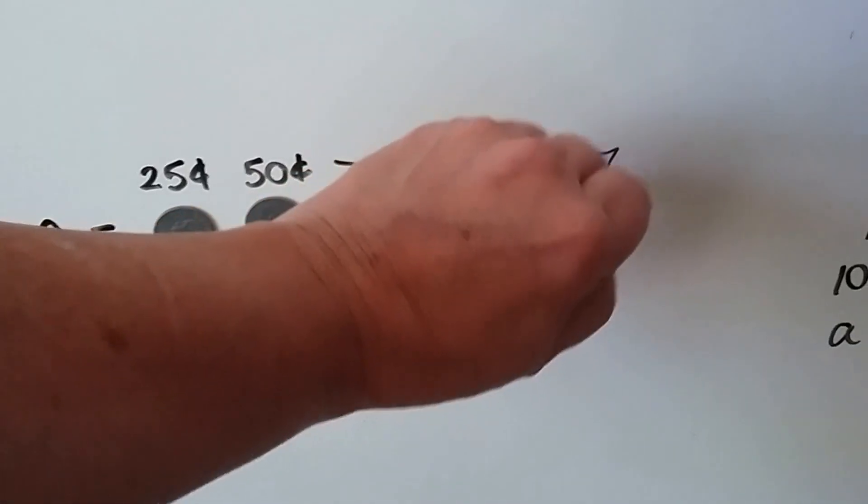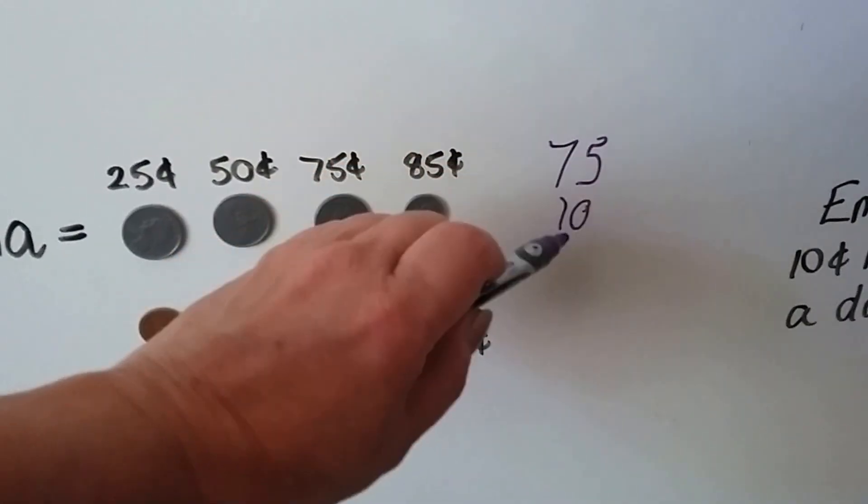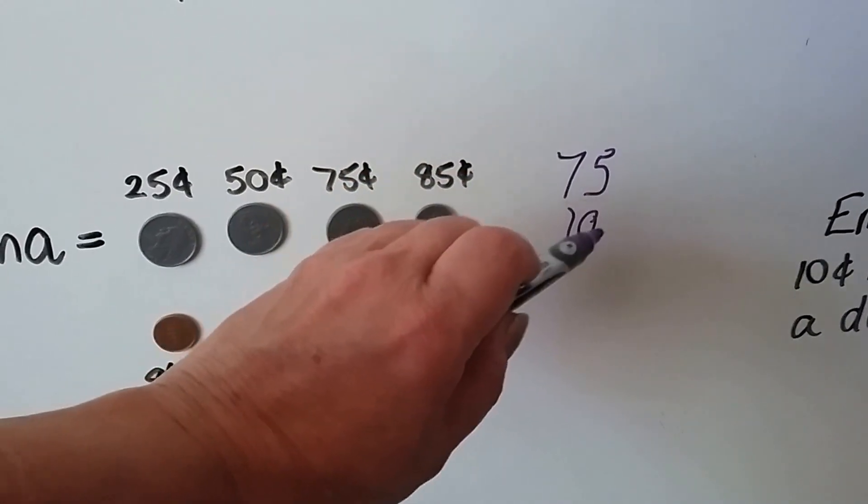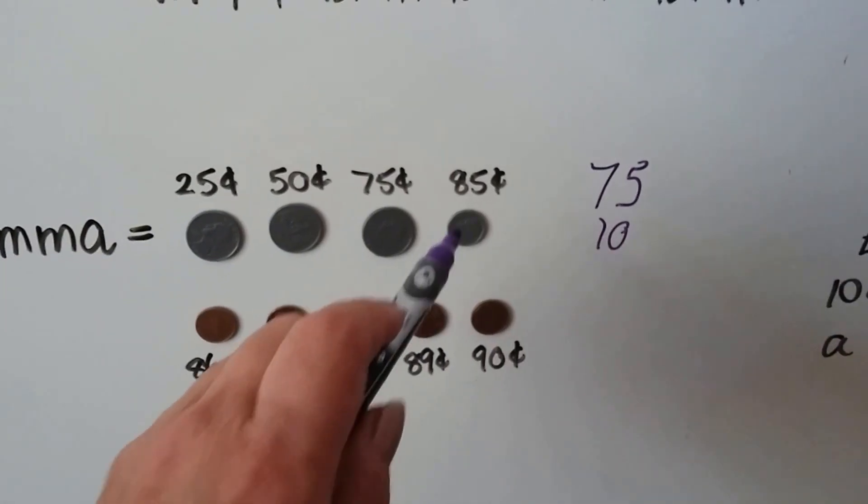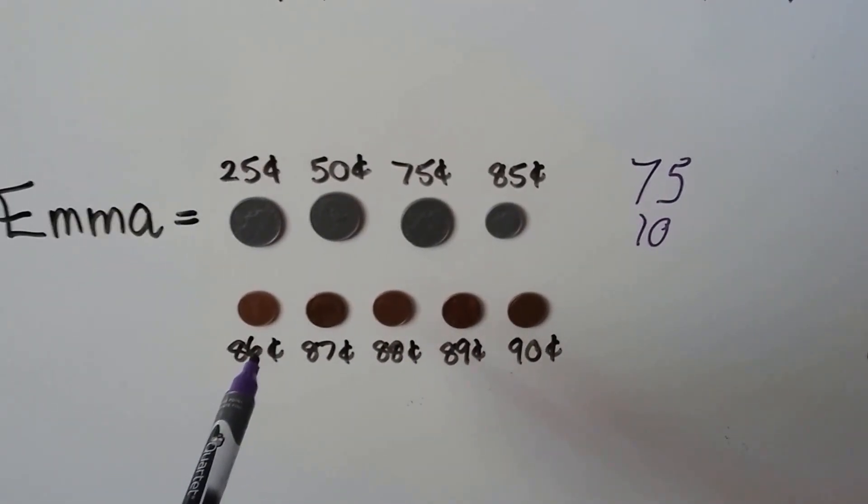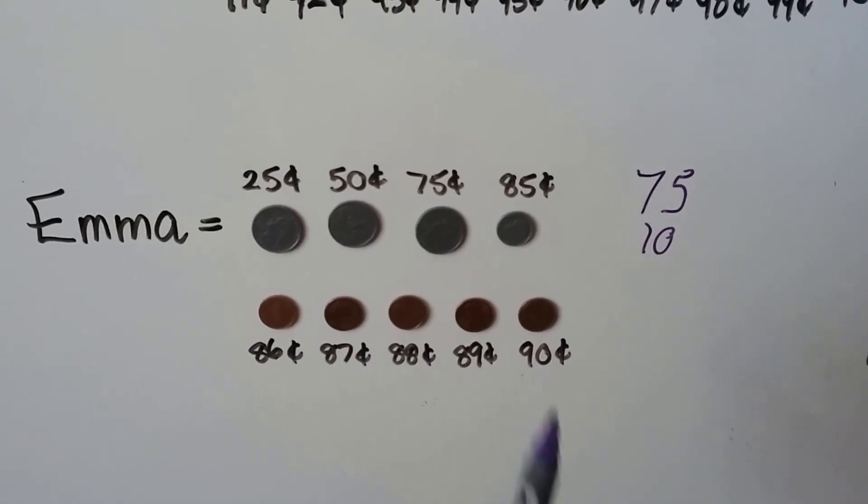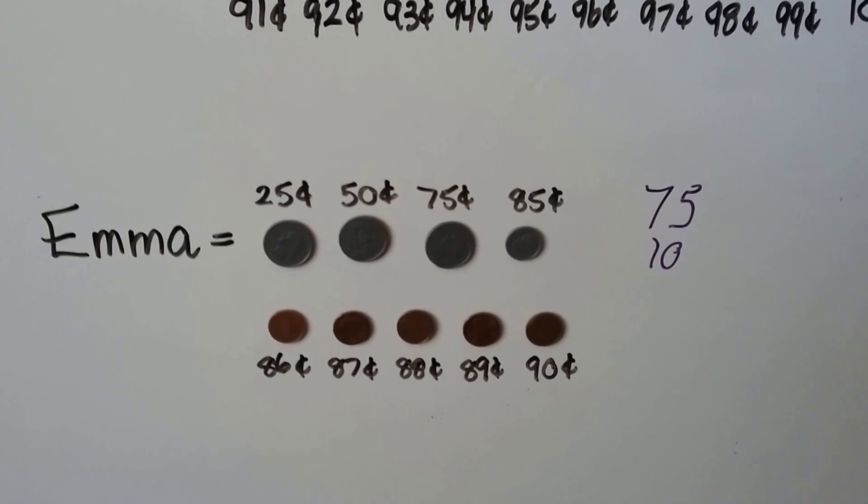If she's got 75 and we add one more 10, we're adding one more to this place, so we have eight and a five in the ones place. We have 85. Adding the pennies: 86, 87, 88, 89, 90. Emma has 90 cents.